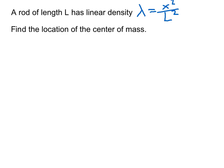Let's find the center of mass of a non-uniform object. We're going to take a rod of length L, but the linear density is not constant. If the linear density was constant, it would be a uniform object like a meter stick, and our center of mass would be in the center of the object, but this is no longer the case.